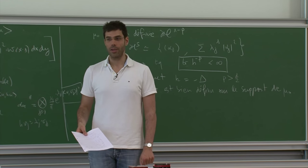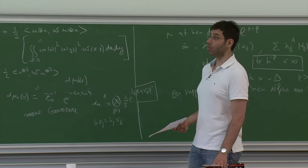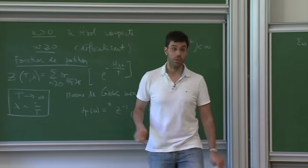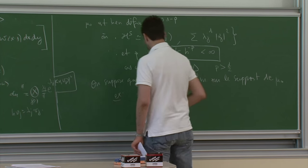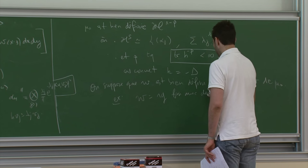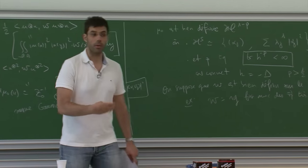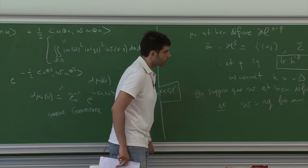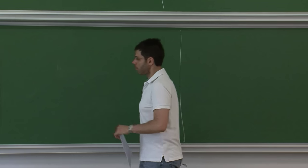Il y a deux choses à régulariser : le manque de décroissance en x−y, et le fait que W est un opérateur de multiplication qu'il faut transformer en un opérateur plus sympathique — il y a une espèce de delta cachée qu'il faut aussi régulariser. Pour l'exposé, on peut penser à W de rang fini avec des vecteurs propres très lisses, de sorte qu'on puisse l'appliquer à une distribution dans ces Sobolev négatifs.